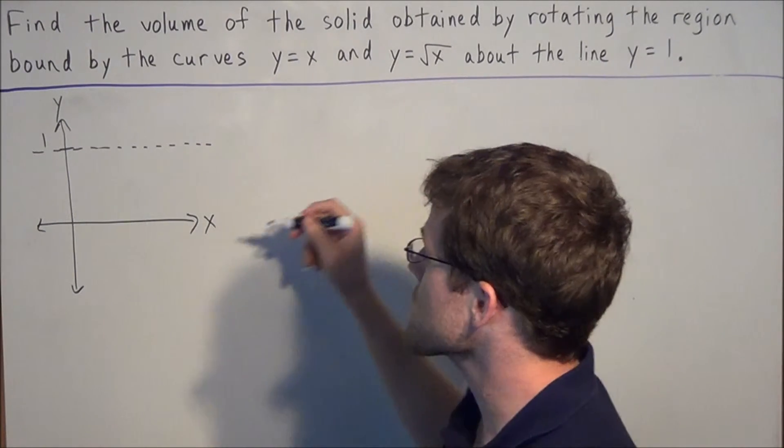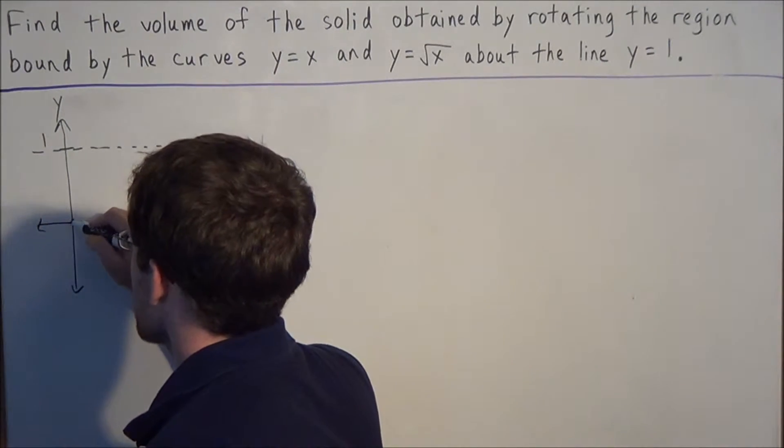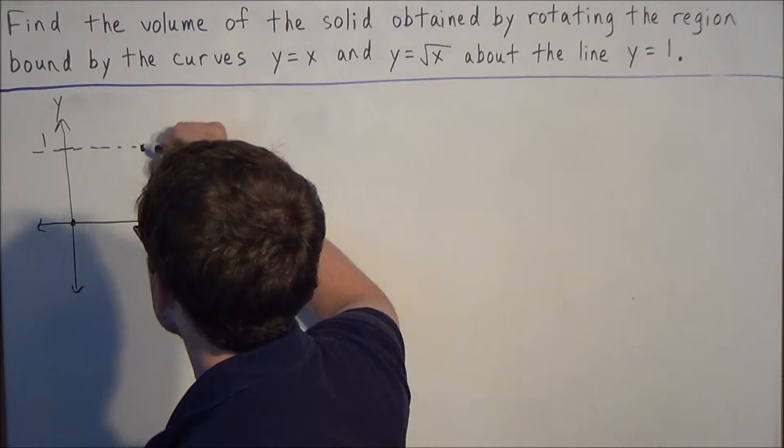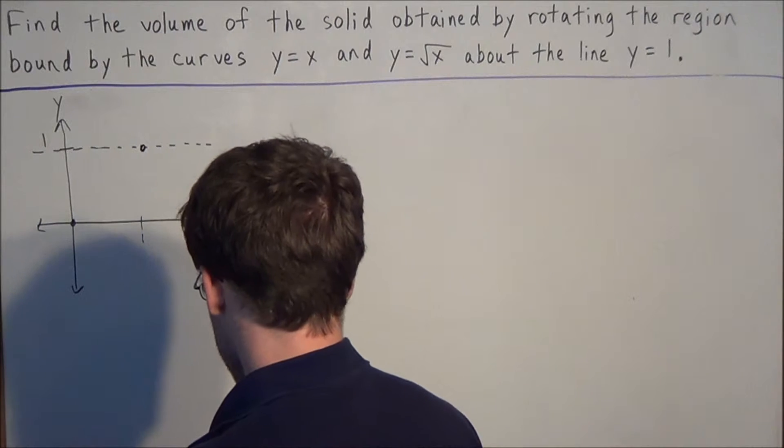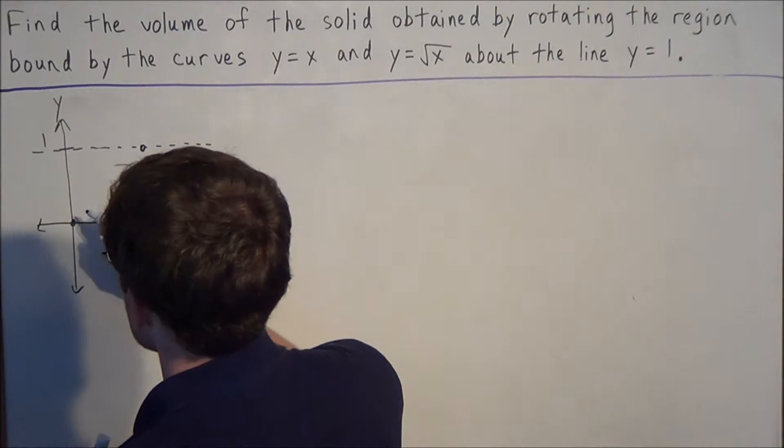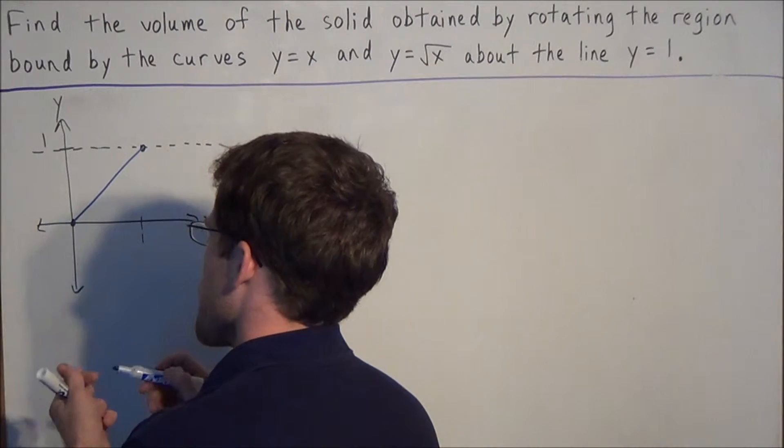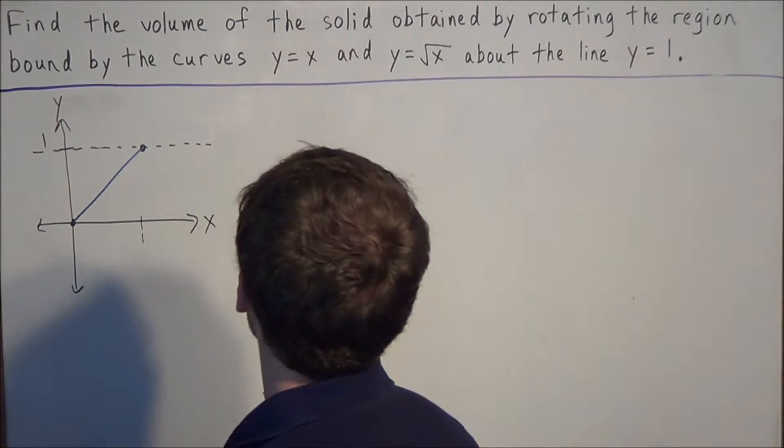The curves in question are the lines—well, we have y equals x, which we'll get a rough sketch of, and we'll do these in different colors too. We have y equals x, and we have y equals square root x.